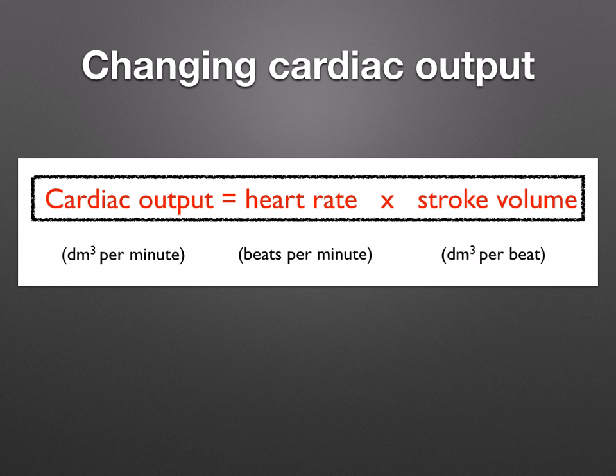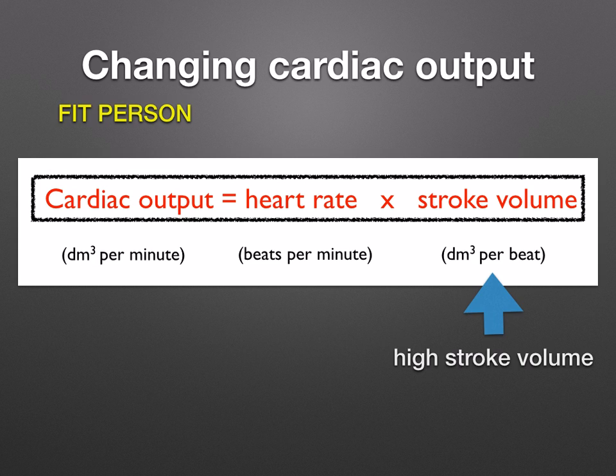Remember the equation: cardiac output equals heart rate times stroke volume. It can be increased by increasing either the heart rate or the stroke volume — a large stroke volume is preferable as it places less effort on the heart. At rest, cardiac output is about 5 cubic decimetres per minute and heart rate is about 60 to 100 beats per minute. During exercise, heart rate increases so cardiac output increases. If a person is fit, resting pulse is low and stroke volume is high, meaning a small increase in heart rate causes a large increase in cardiac output. The resting pulse is also resumed quickly after exercise is stopped.